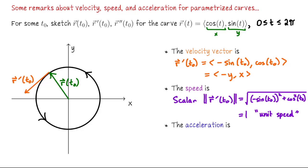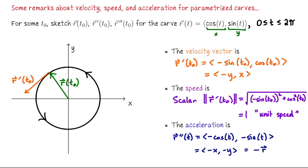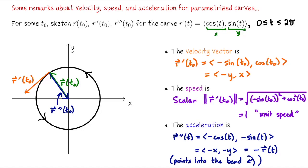Acceleration is the second derivative of r of t, so r double prime of t equals negative cosine of t, negative sine of t. Relating that back to x and y coordinates, this is negative x, negative y — it equals negative r of t. To sketch this vector, we start at the point on the curve and point directly back to the origin. The acceleration vector points into the bend; we're bending around the tail of this vector.